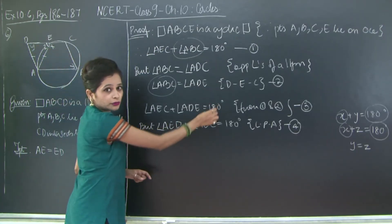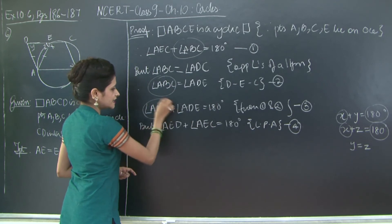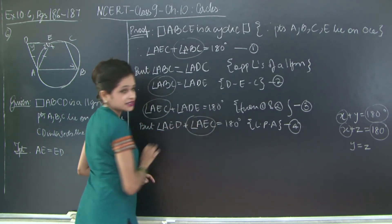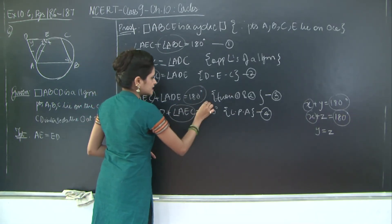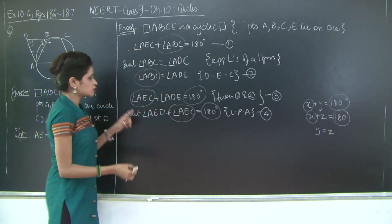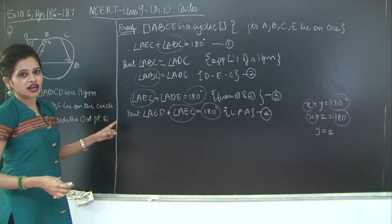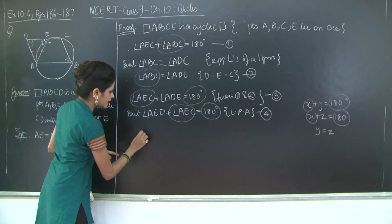So over here from three and four what do I get? I have AEC over here. I have AEC over here. I have 180 degrees and 180 degrees. So what can you say? That equals that are equal to the same thing are equal to each other. Therefore what do I get?